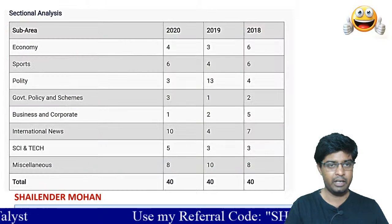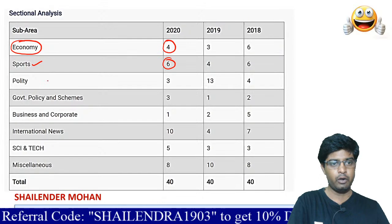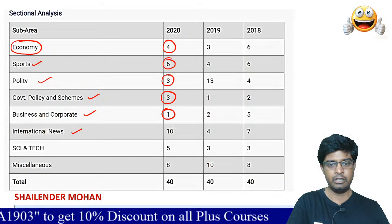Moving to the sectional breakdown: in MAT 2020, economics had 4 questions, sports-related questions were 6, polity or Constitution of India had 3, government schemes had 3 — all from current affairs. Business and corporate had 1 question, international news had 10 questions, and science and technology had 5 questions.